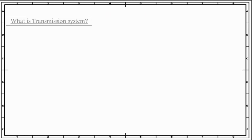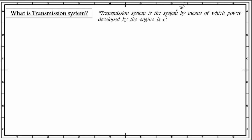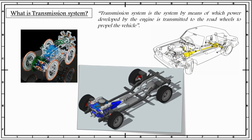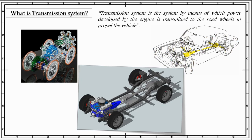First, I would like to discuss what is a transmission system. It is the system by means of which power developed by the engine is transmitted to the road wheels to propel the vehicle. We can say that transmission system is like the veins of the vehicle — just like the veins in our body which transmit blood from the heart to all parts of the body, the transmission system transmits the power developed by the engine to all the essential parts of the vehicle in order to propel it.